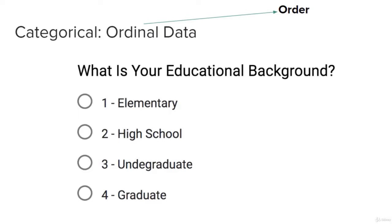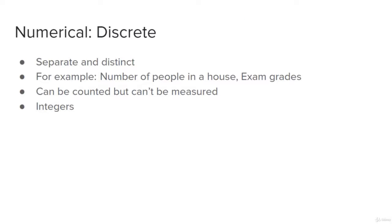Let's talk about ordinal data, another type of categorical data. As the name implies, 'ordinal' comes from 'order,' so there is a certain order to this type of data. For example, when asked about educational background, we have phases: elementary, high school, undergraduate, and graduate. These are in ascending order, and the numbers representing them reflect that order — so categorical ordinal data has a defined order to its categories.